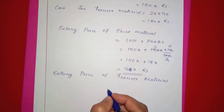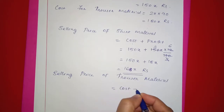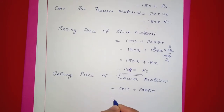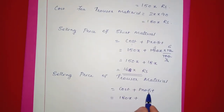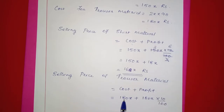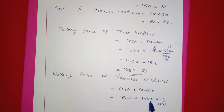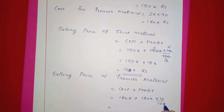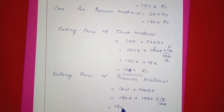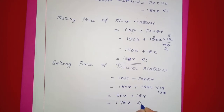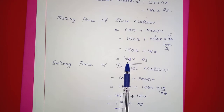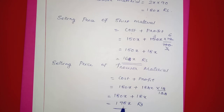Now for the trouser material: selling price equals cost plus profit. The cost price of the trouser material is 180x rupees — that is 2x meters at Rs.90 per meter. Profit is 10%, so we add 180x plus 180x into 10 by 100, which gives 180x plus 18x equals 198x rupees.